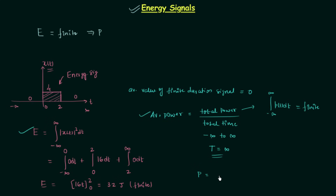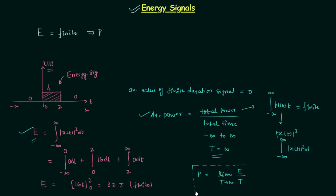The average power equals the limit as T tends to infinity of total energy over total time. Since the instantaneous power p(t) equals |x(t)|², integrating from minus infinity to infinity gives a finite value — which is the total energy. When you divide this finite value by infinity you get average power equal to 0. So we understand why power equals zero when energy equals a finite value.